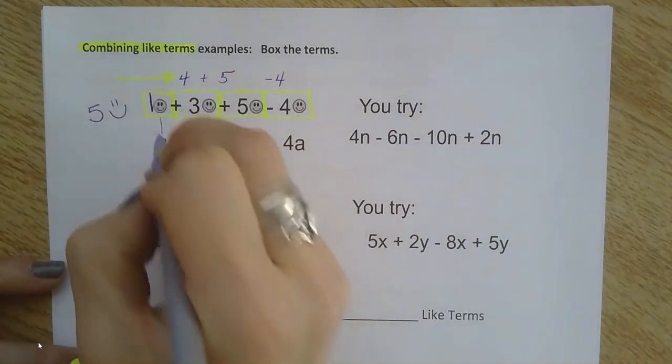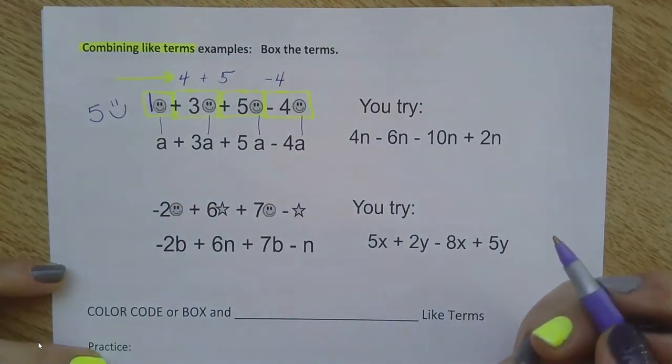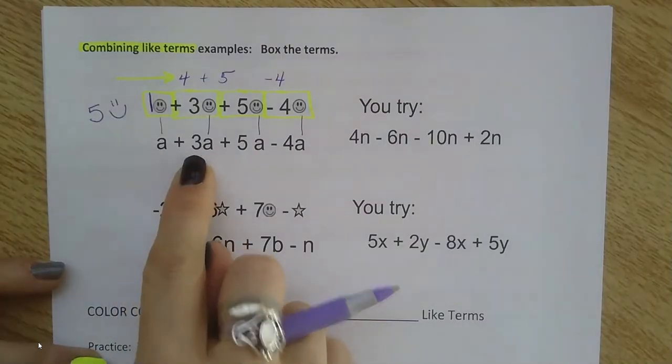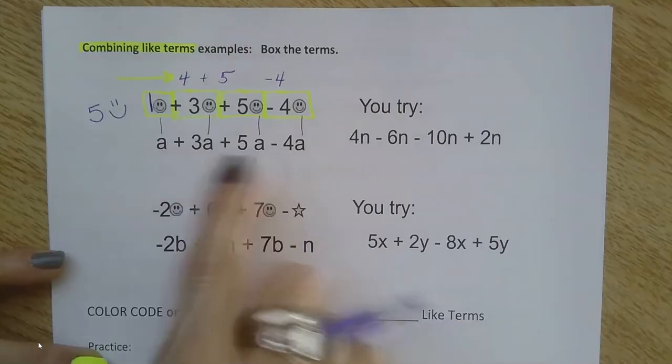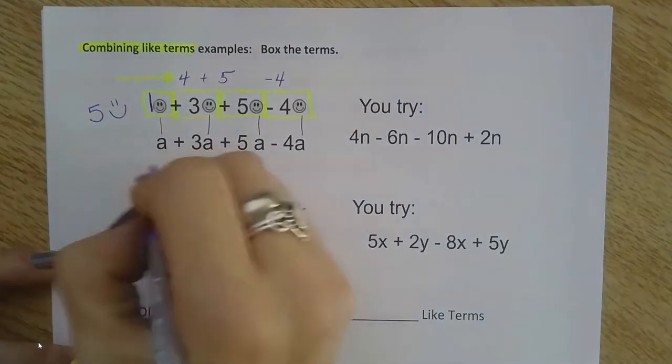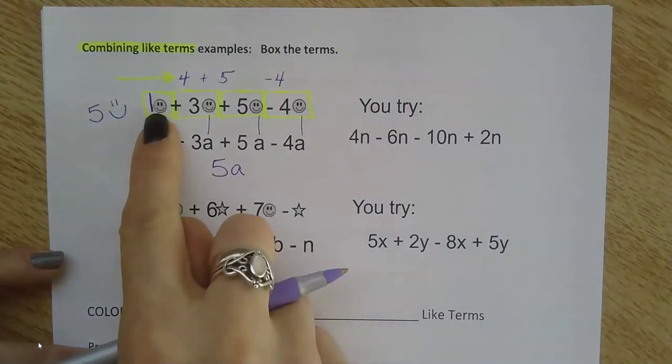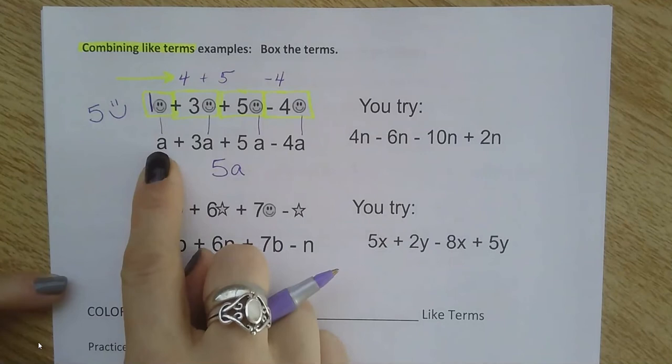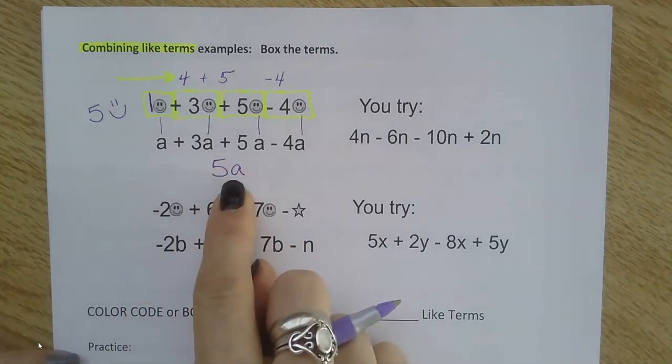I could do the same thing and turn those smiley faces into a variable. Instead of counting up smiley faces, now I'm counting up a's: 1 a, 3 a's, 5 a's, and then negative 4 a's. If I do it the same way, I end up with 5 a's. Whether you're counting actual objects or things or you're counting the variables, that's what we do when we combine like terms.